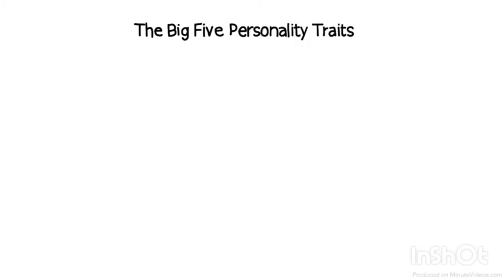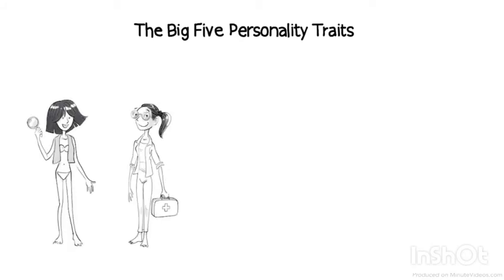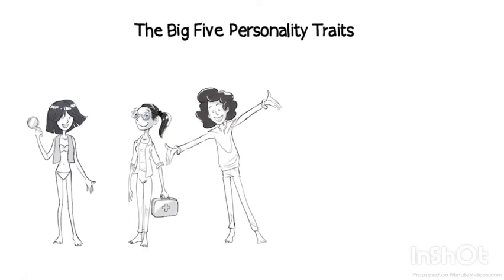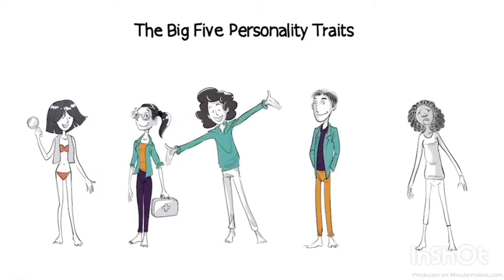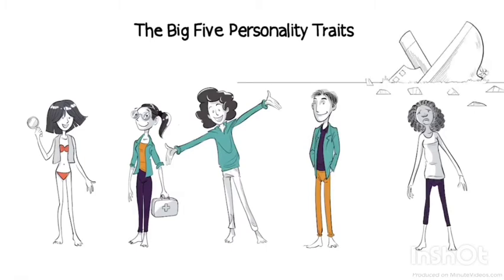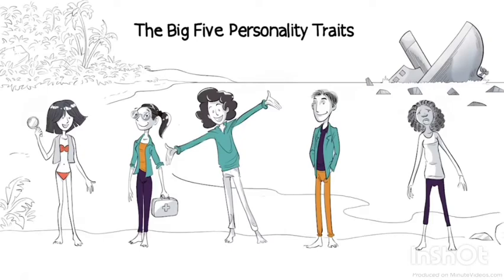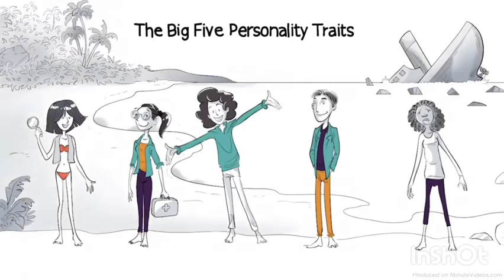The theory of the Big Five personality traits claims that we can describe ourselves with five main characteristics: Open, Conscientious, Extrovert, Agreeable, and Neurotic. Each of us varies in how much of each trait is shown in our personality. To understand what each trait really means, let's look at five characters and how they cope after wrecking their boat and being stranded on an island in the middle of the ocean.